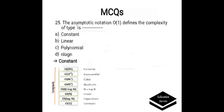The asymptotic notation O(1) defines the complexity of type: a) constant, b) linear, c) polynomial, or d) log N. Correct answer is constant. The notation O(1) is nothing but constant complexity.